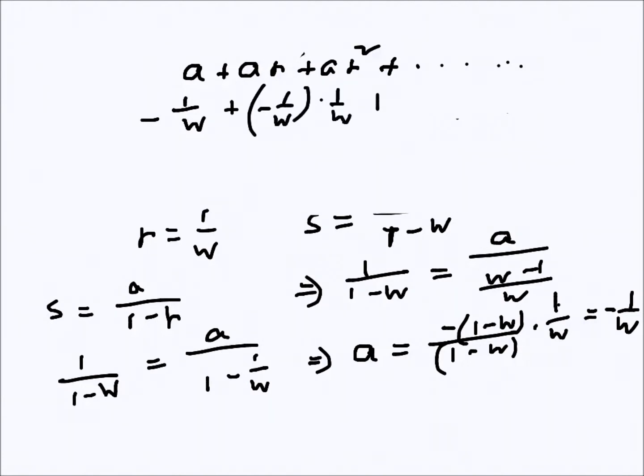Plus (-1/w) times (1/w)². R is 1/w squared, so 1/w² minus 1/w³ and so on. The series goes like that and it will be negative.